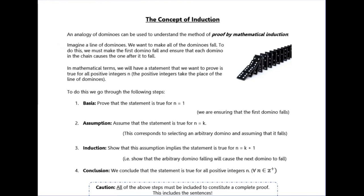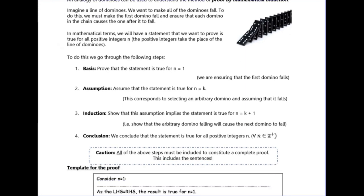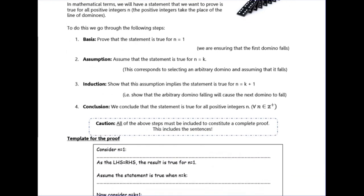That's enough to show that all of the dominoes in your line will fall over, because if the first one falls over then you prove the second one will fall over, then if the second falls over you prove the third falls over, and so on. These are the steps for proof by induction that we're going to work through, and they are the same for every proof by induction question. In this pack we're going to cover four different types: the first one is sums of series proof.